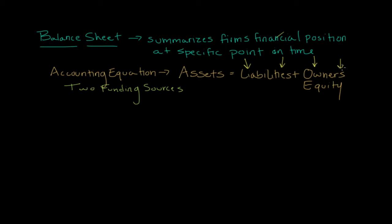Assets will always be equal to liabilities plus owner's equity. Now assets are things the company owns that have some type of value. This can include anything from cash, equipment, inventories—items that you have purchased that you're waiting to sell.